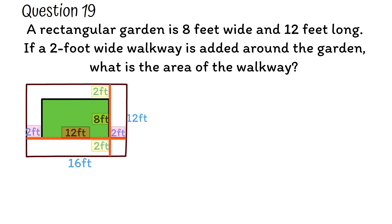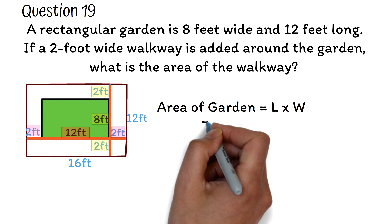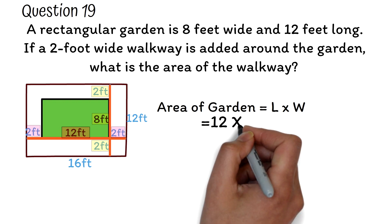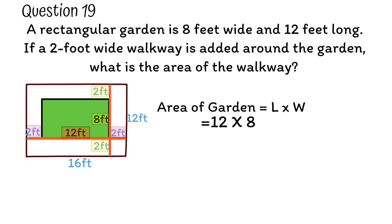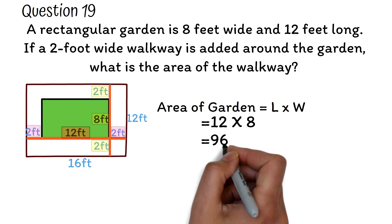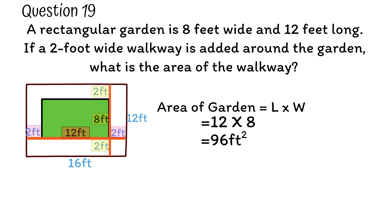Since the garden is rectangular, the area of the garden is equal to length times width. The length is 12 multiplied by the width, which is 8. Multiply 12 by 8 and that will give us 96 feet squared. We have to also know the area of the garden plus the walkway. This is also a rectangle.